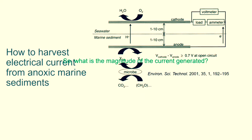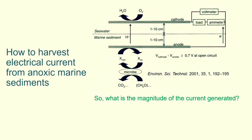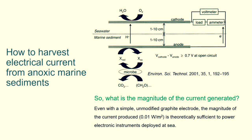So, what is the magnitude of the current drawn? Even with a simple unmodified graphite electrode, the magnitude of the current produced, 0.01 W per square meter, is theoretically sufficient to power electronic instruments deployed at sea.